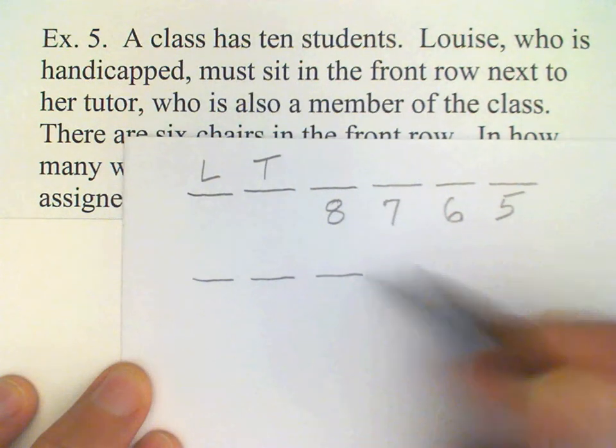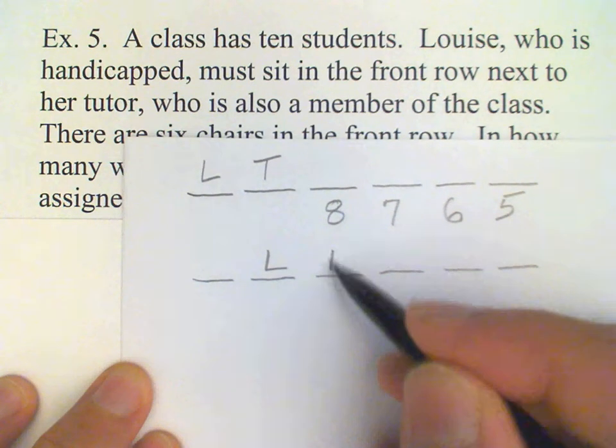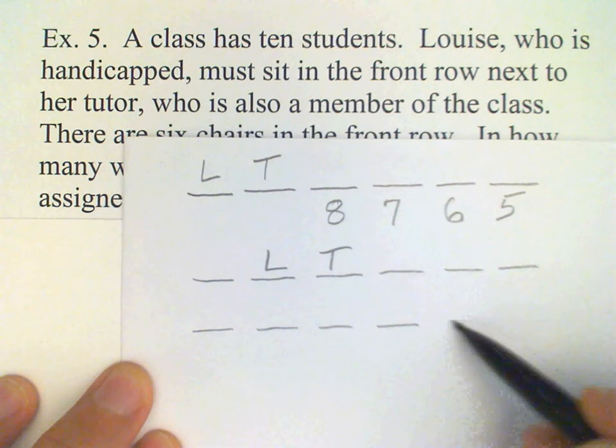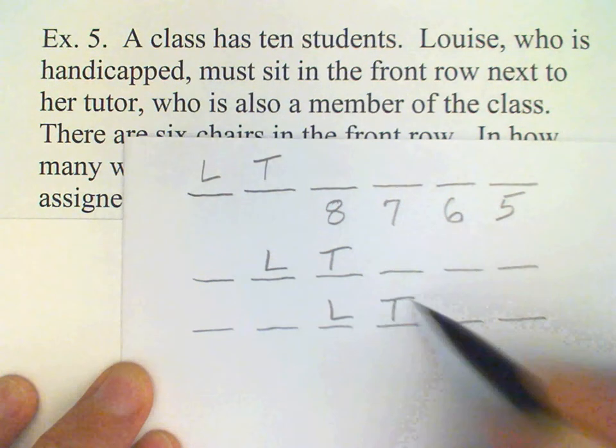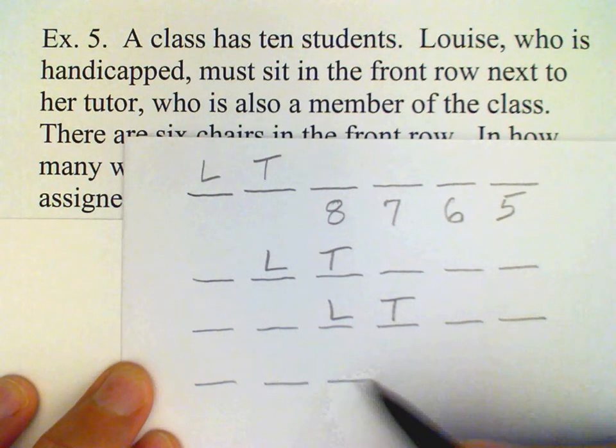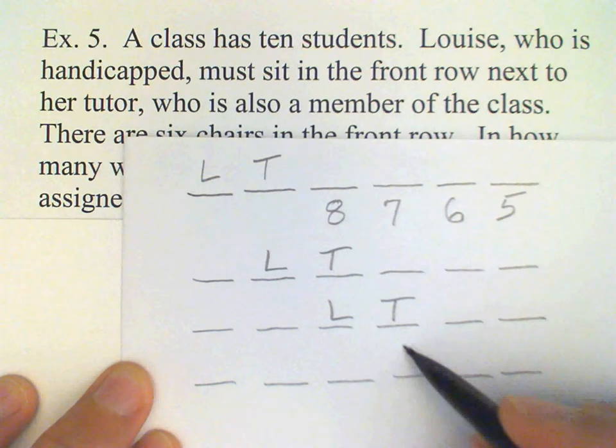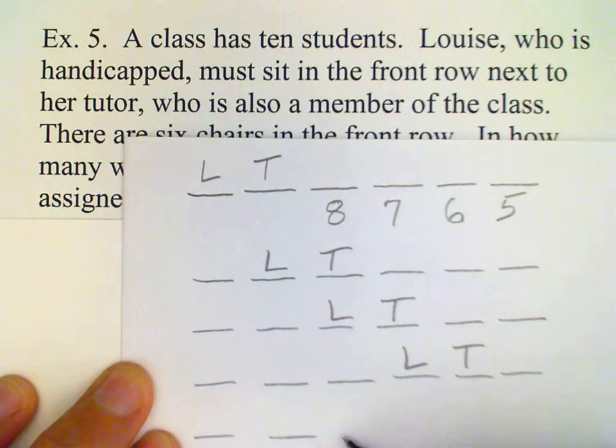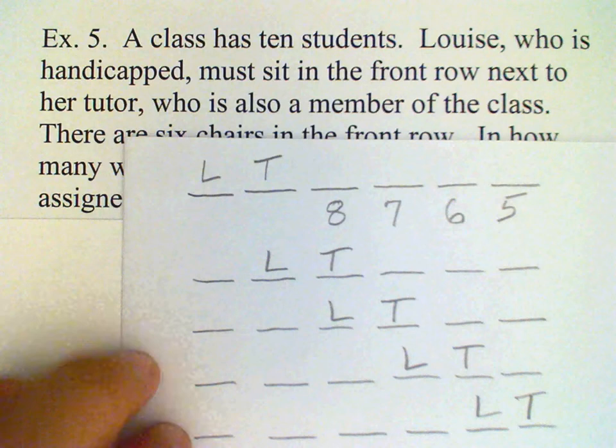So let's draw out some more possibilities for Louise. Louise could sit there. Or Louise could sit there. Or we could have Louise and her tutor sitting here. Or finally, Louise and her tutor could be sitting here on the right.